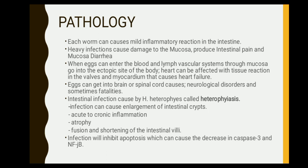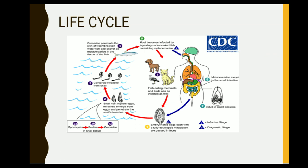The intestinal infection caused by the trematode Heterophyes, called heterophyiasis, infects the intestinal villi and can cause acute and chronic inflammation, atrophy, fusion, and shortening of the intestinal villi. The infection inhibits apoptosis, causing a decrease in caspase-3 and NFGB, which are proteins essential to inducing programmed cell death.